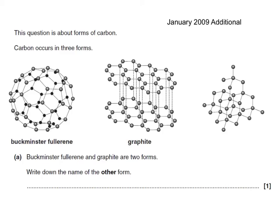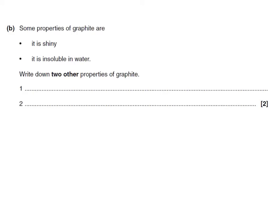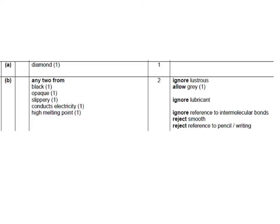Here's a past paper question on this topic: Carbon occurs in three forms. Buckminsterfullerene and graphite are two forms — write down the name of the other form. You need to be able to recognise these forms from pictures; this one is diamond. Some properties of graphite are that it's shiny and insoluble in water — write down two other properties. Thinking particularly of pencils, we might say it is slippery and it is opaque. Opaque is the opposite of see-through. The structure shown was diamond, and any two of these properties are acceptable.